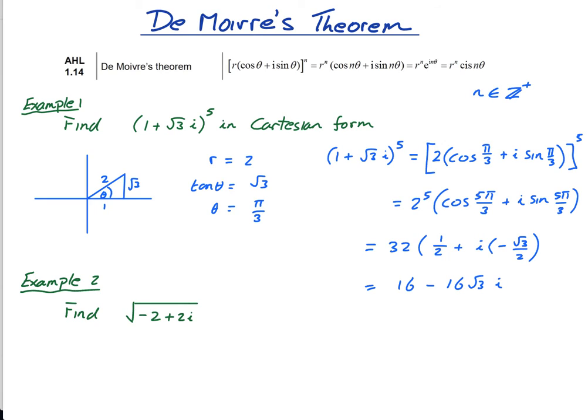So I'm left with 32 times a half is 16, 16 minus 16 root 3 i. That is this written in Cartesian form.